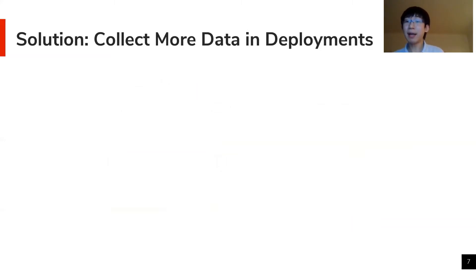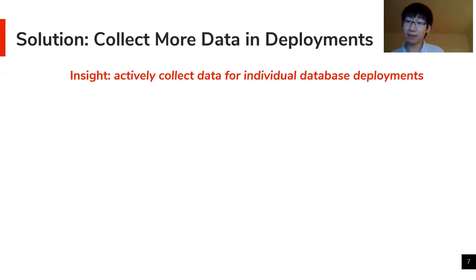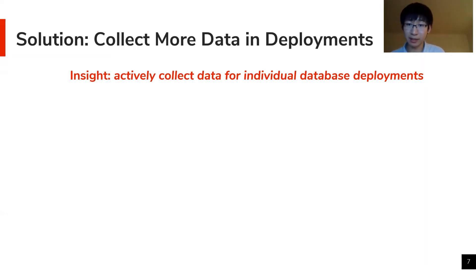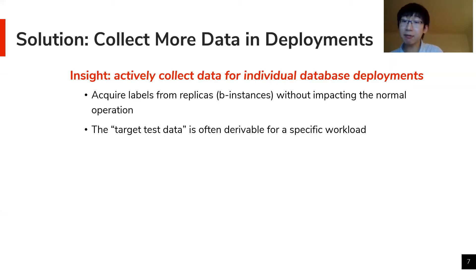Since the problem is in the data, one natural thought is to just get more data. However, naively collecting training data to exhaust the entire input space is infeasibly costly given all those variations. The key insight of our method is to actively collect additional training data for individual databases during deployments. First, production databases are often deployed with replicas where we can execute additional queries and get labels without impacting normal business operations.